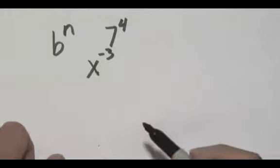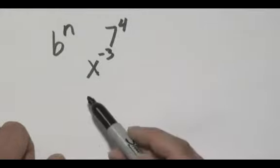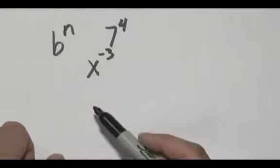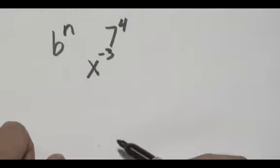Typically, what ends up happening is in words, the number that's mentioned first or the term that's mentioned first is your base, and what's mentioned afterwards is going to be the exponent.